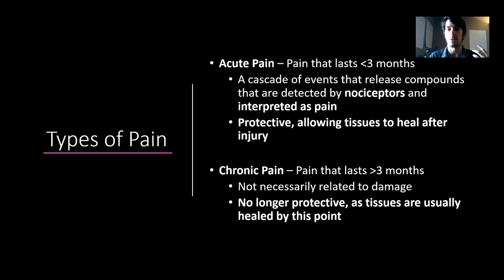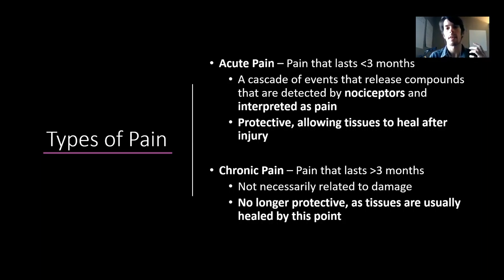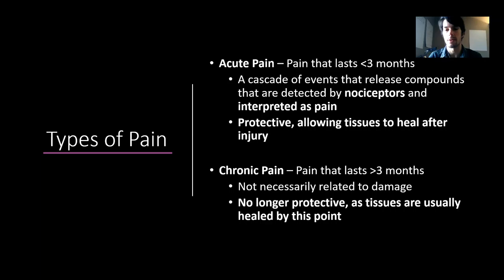There are two main subtypes of pain broadly discussed. We have acute pain, which usually lasts less than three months. It's related to a cascade of events where we release chemical compounds detected by a particular type of receptor called nociceptors, which are then interpreted as pain. Nociceptors are threat detectors, essentially detecting the potential for damage or actual acute damage. This pattern is adaptive and protective — it allows our tissues to heal after an injury because we're aware of the area and know to let it rest.